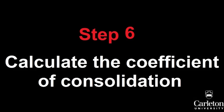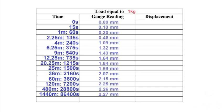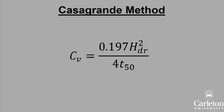You can now calculate the coefficient of consolidation using the data from a load of 1 kilogram. There are two methods to interpret the data: Casagrande's logarithm time fitting method, or Taylor's square root of time fitting method. Before you do this, retrieve the data from the computer for the 1 kilogram test. The gauge reading will be given as the drop in height from a start of 0 — this needs to be converted to reflect the height of the sample by subtracting the gauge reading from the height of the sample.